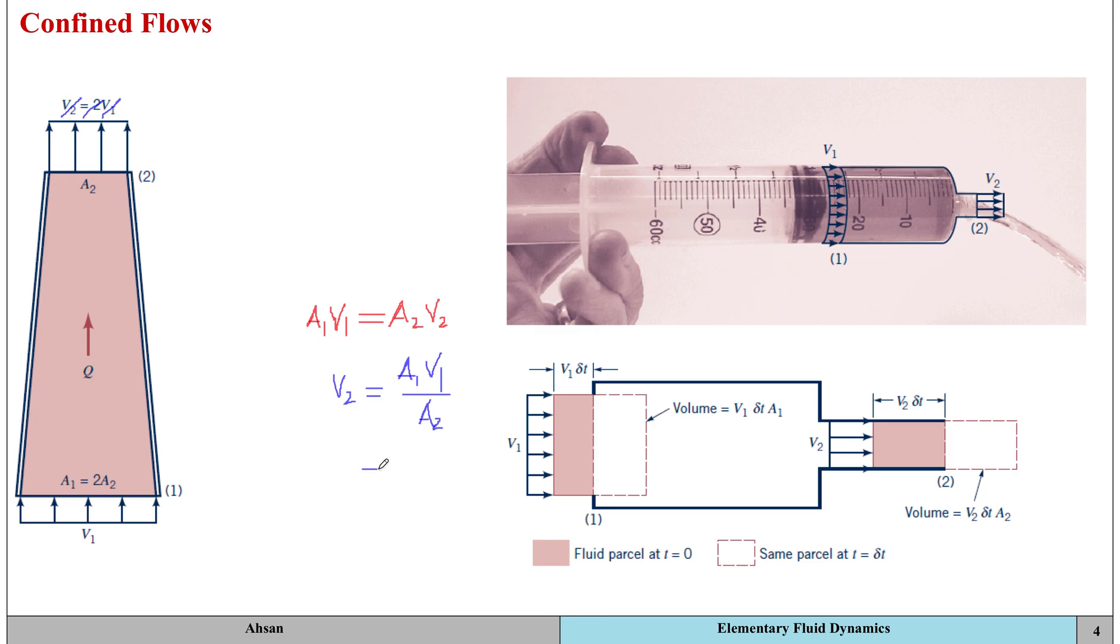I can substitute the value of A1 here, which is 2 A2, and A2 is going to get cancelled out, leaving me with velocity at 2 in terms of velocity at 1.